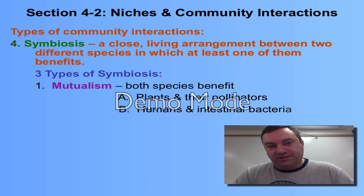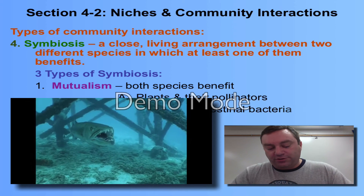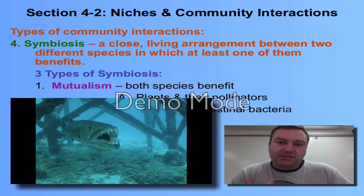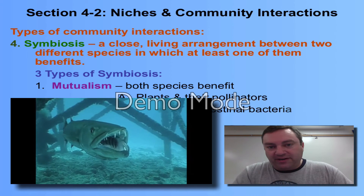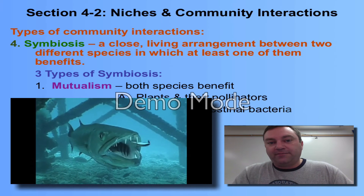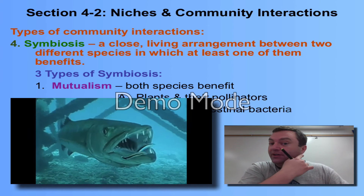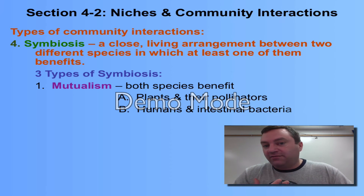A third example of mutualism is a cleaning station on a coral reef in the ocean. Some larger fish will come up to this cleaning station, and smaller fish will swim around them and pick off any parasites and algae growing on them. Sometimes the fish may even open their mouths and the smaller fish will move into their gills to clean off parasites. That's mutualistic because one fish gets cleaned and the other fish gets food — a really neat adaptation.